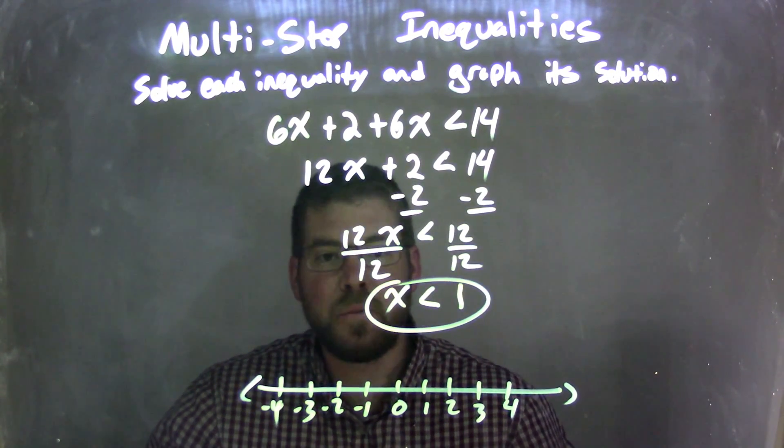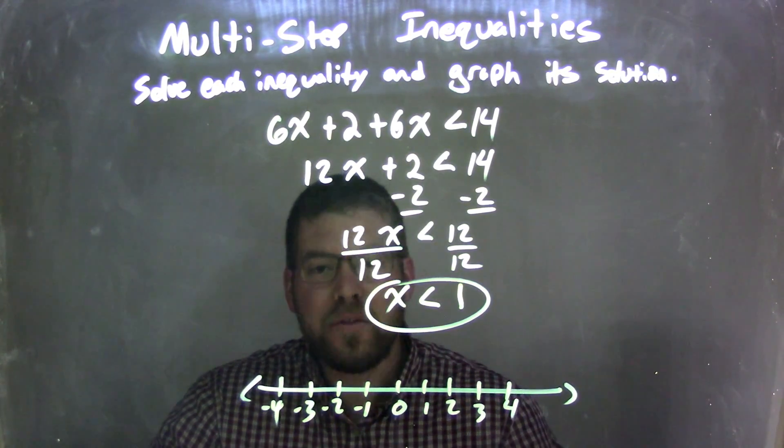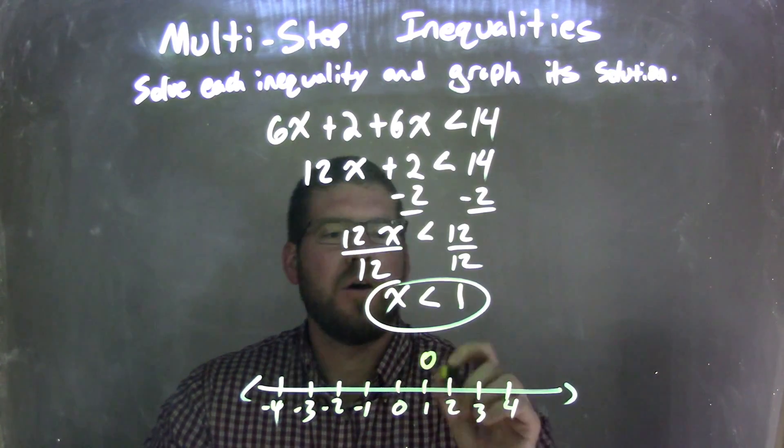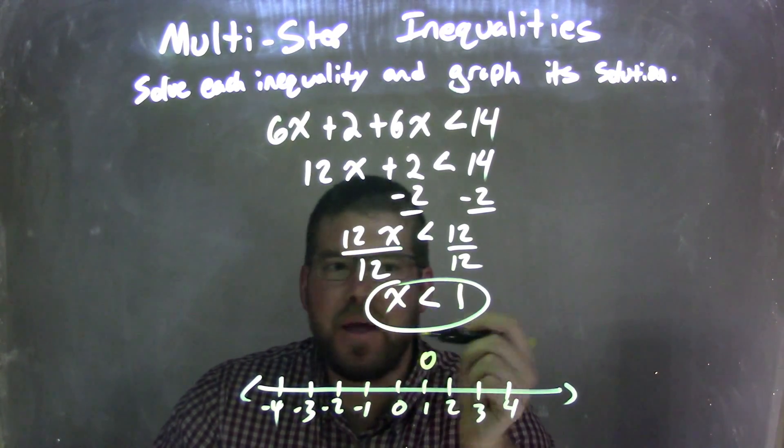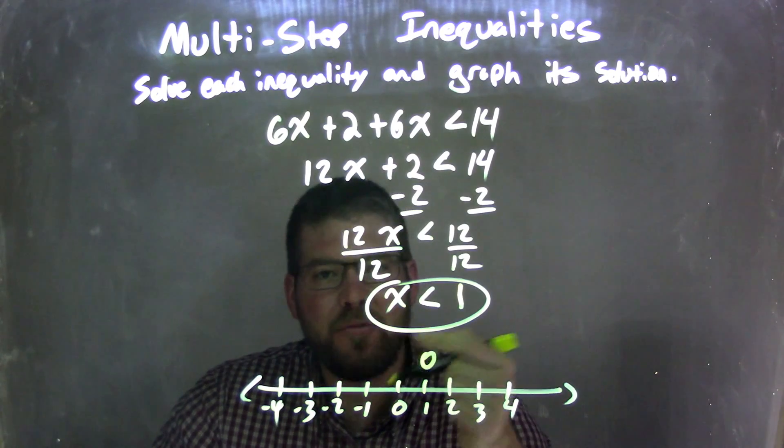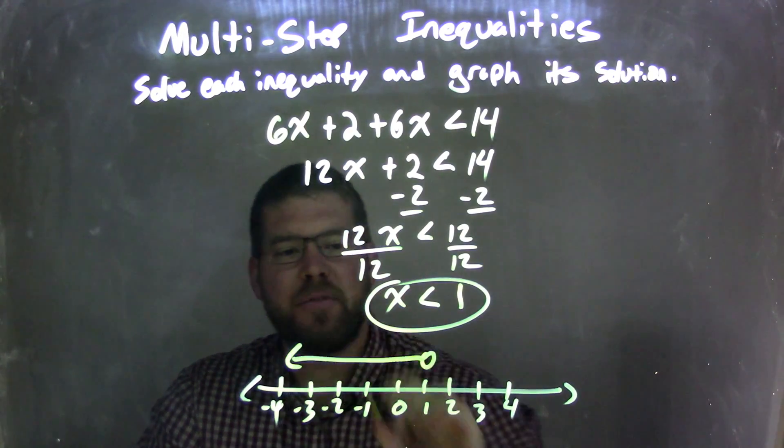So if x is less than 1, I'm going to put an open circle at 1, open circle because it's not equal to, then I put my arrow to the left because x is also less than 1, so I shade to the left there.